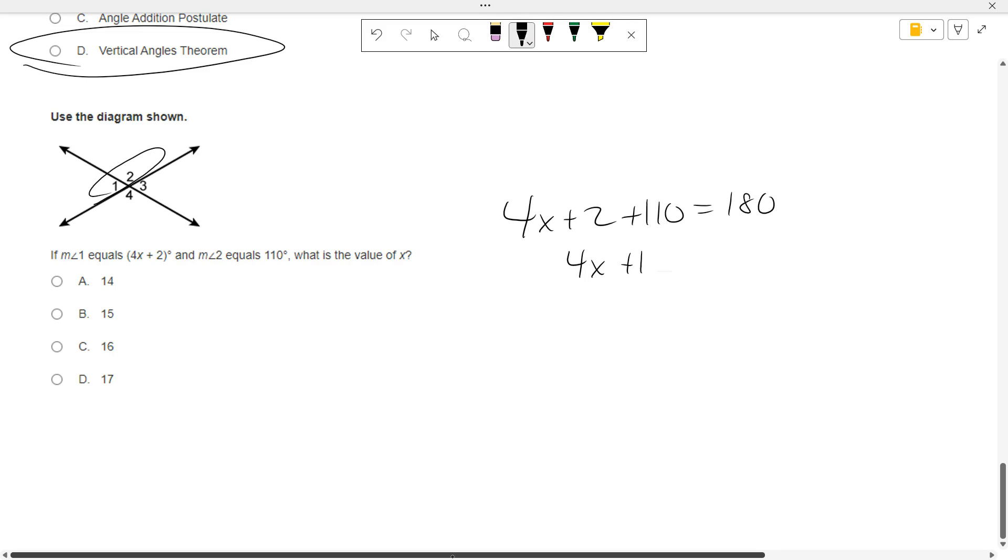Let me redo that. 112 equals 180. 4X equals 68. Divide by 4. X equals 17.